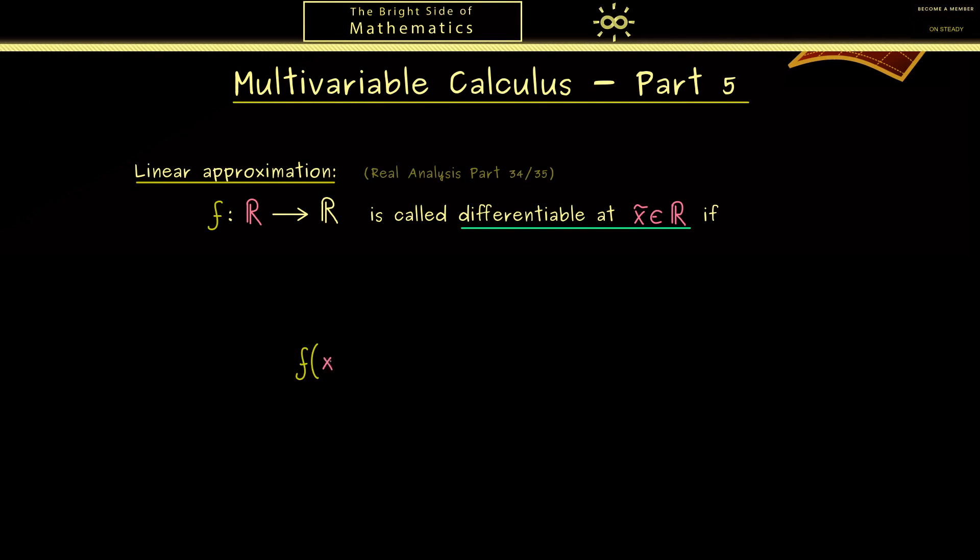Roughly speaking, it means that we can approximate the function around this point x tilde linearly. This means we look at x tilde and shift it a little bit by a number h. And now this should be f at the point x tilde plus a linear function we could write as b times h. This means here if we look at the graph of f and fix the point x tilde, then we have a tangent here. In other words, here you find the corresponding function for this tangent with the new variable h.